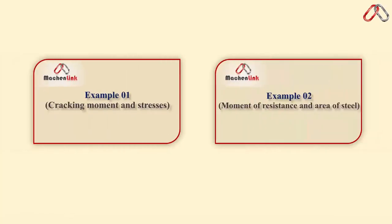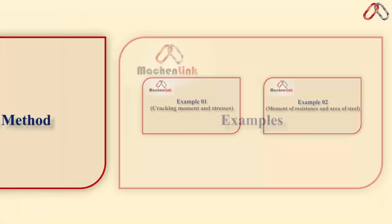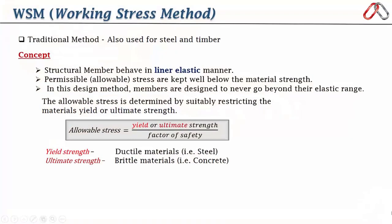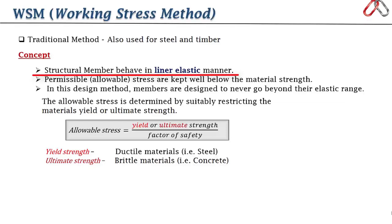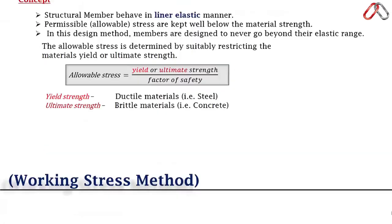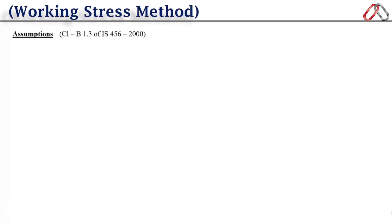In the second part there are two practical examples to build your understanding of practical application. Let's start with the assumptions of the working stress method. I introduced working stress method in the second lecture. The main concept is that structure members behave in a linear elastic manner. For analysis and design we use allowable stress, also known as permissible stress, obtained by dividing the ultimate or yield strength by the factor of safety.